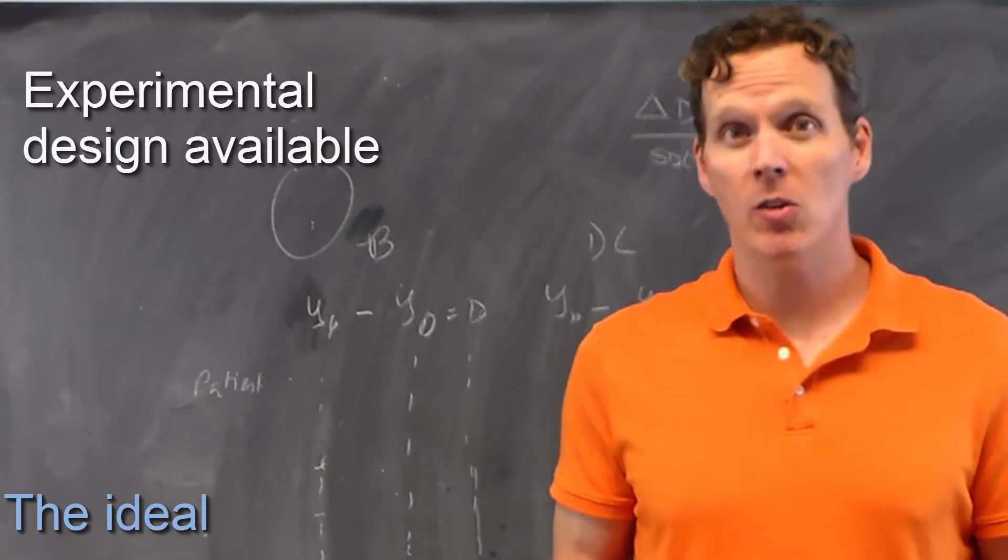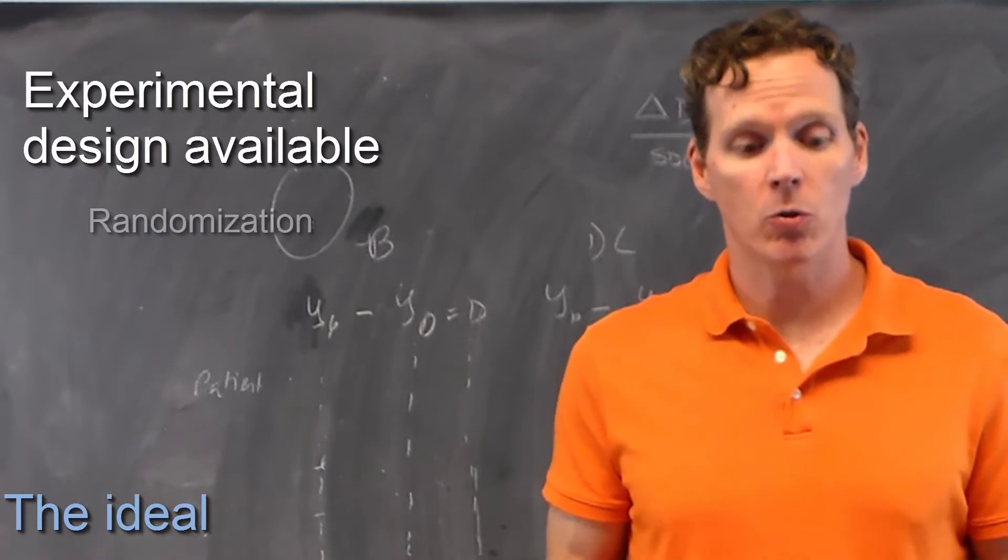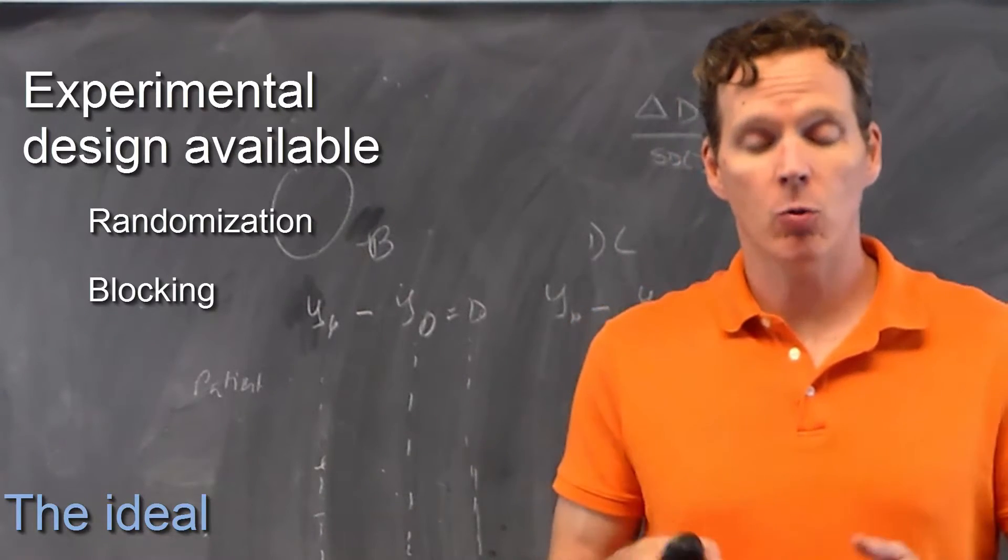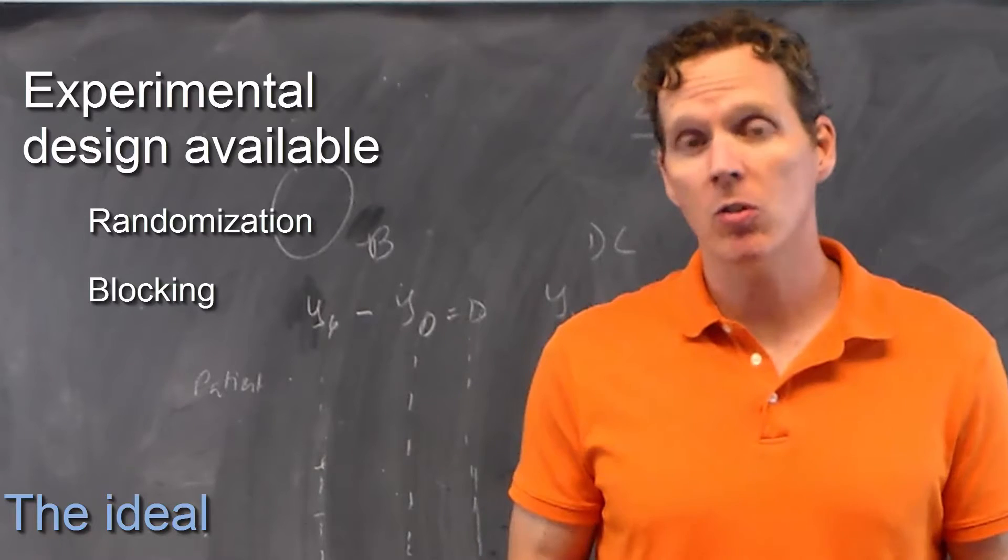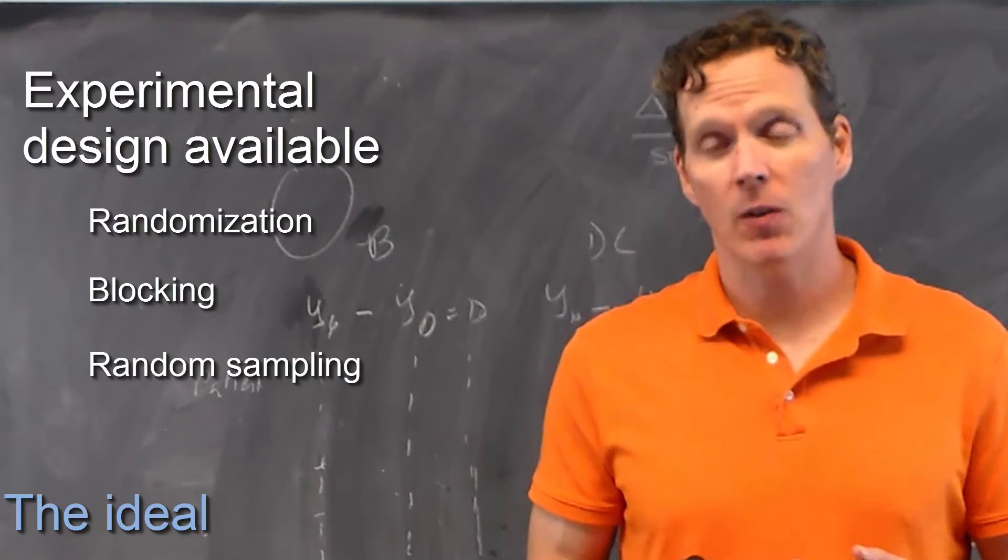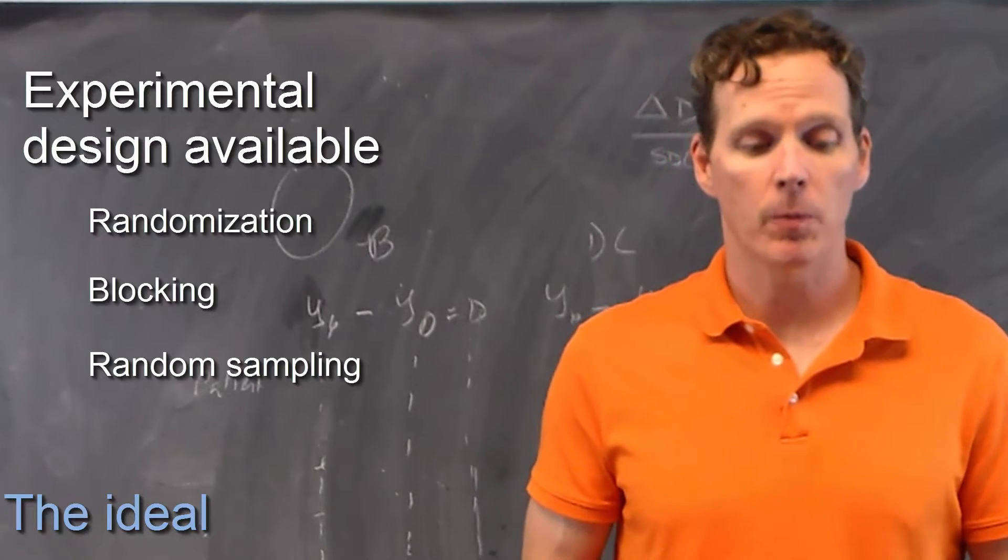And experimental design is available to you. For example, you can use randomization across the treatment of interest. You can stratify or block on some nuisance variables. Your sample is a random sample from a population of interest, so you know that it's generalizable.